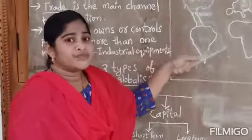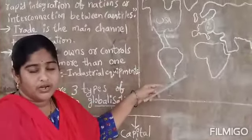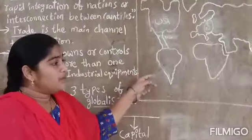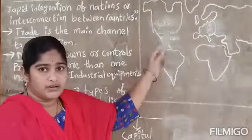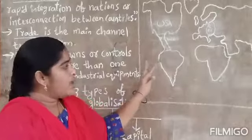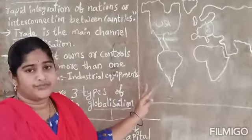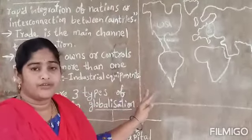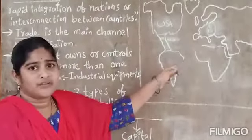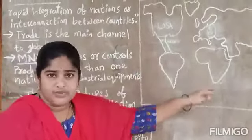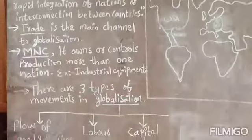For example, transportation — all goods are transported all over the world, so transportation develops everywhere. In the same way, information and telecommunication technology, for example telegraphing, emailing, telecommunication — everything develops and crosses across the world.